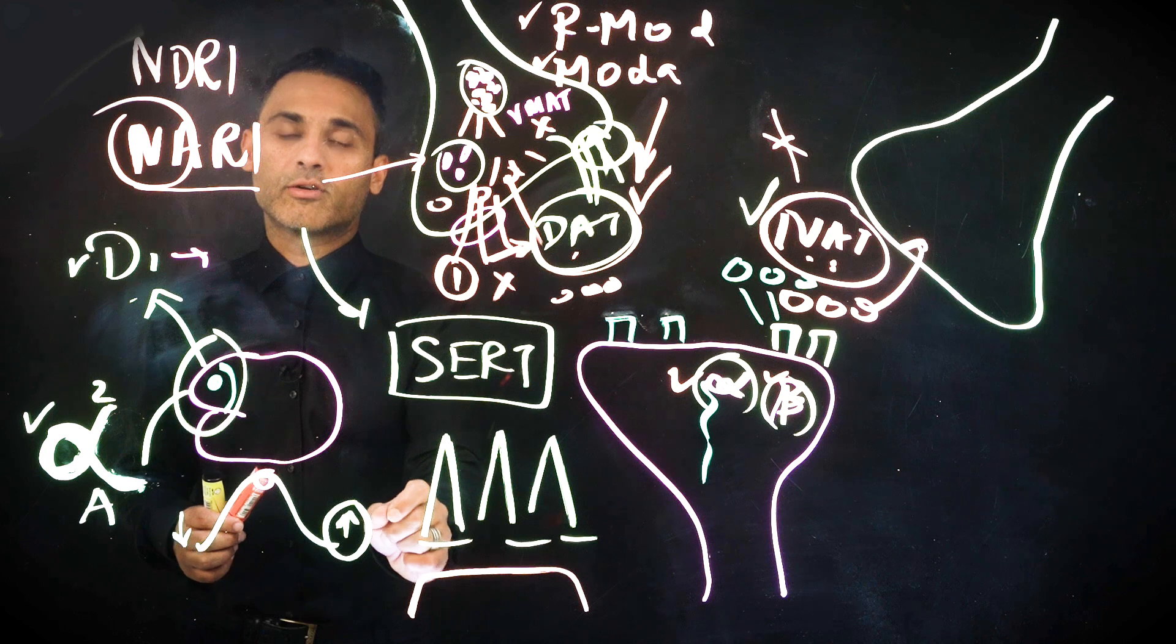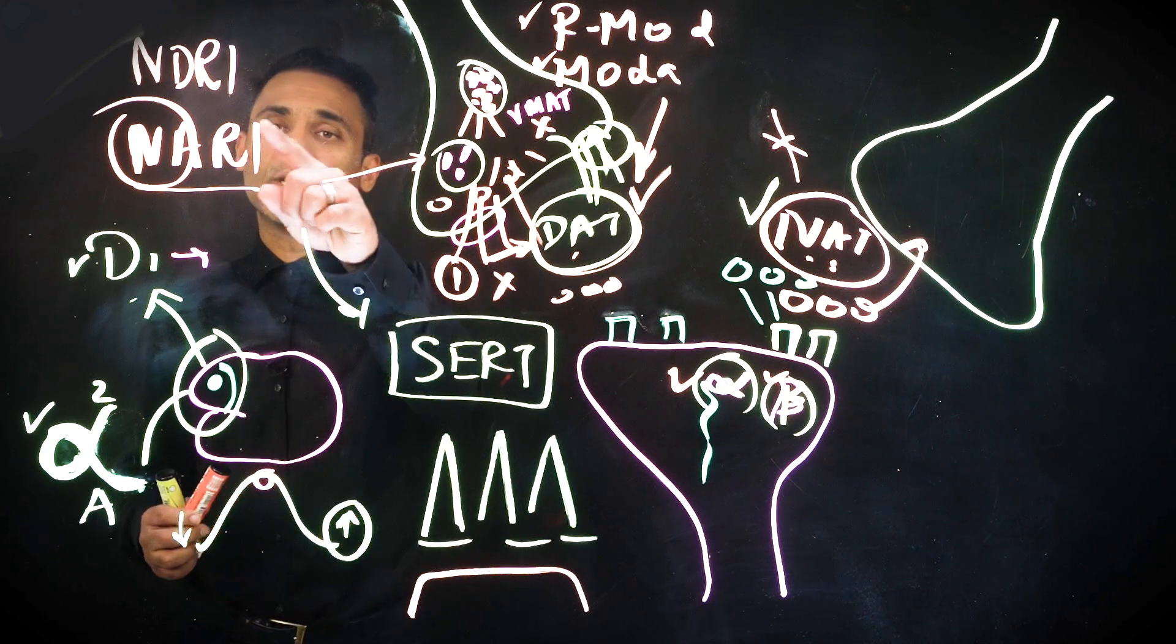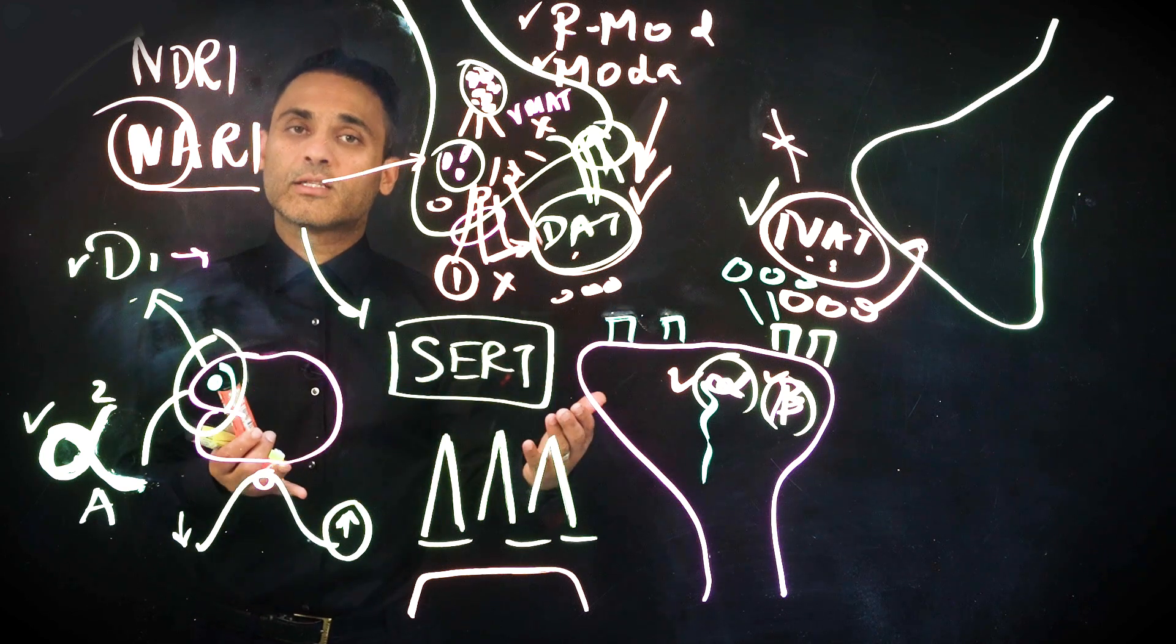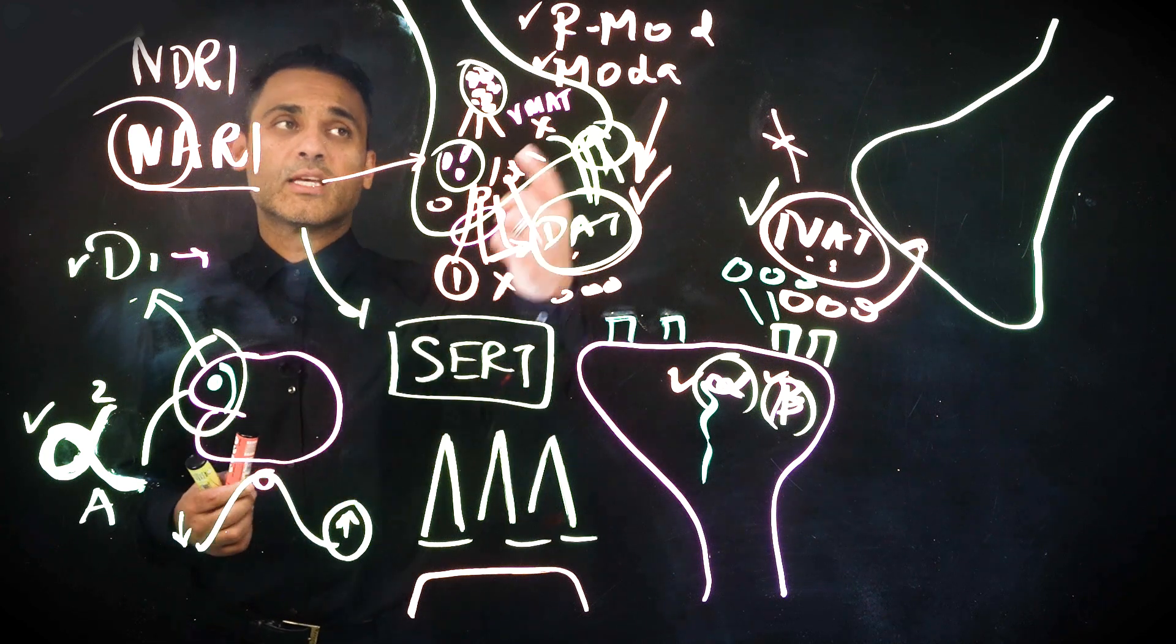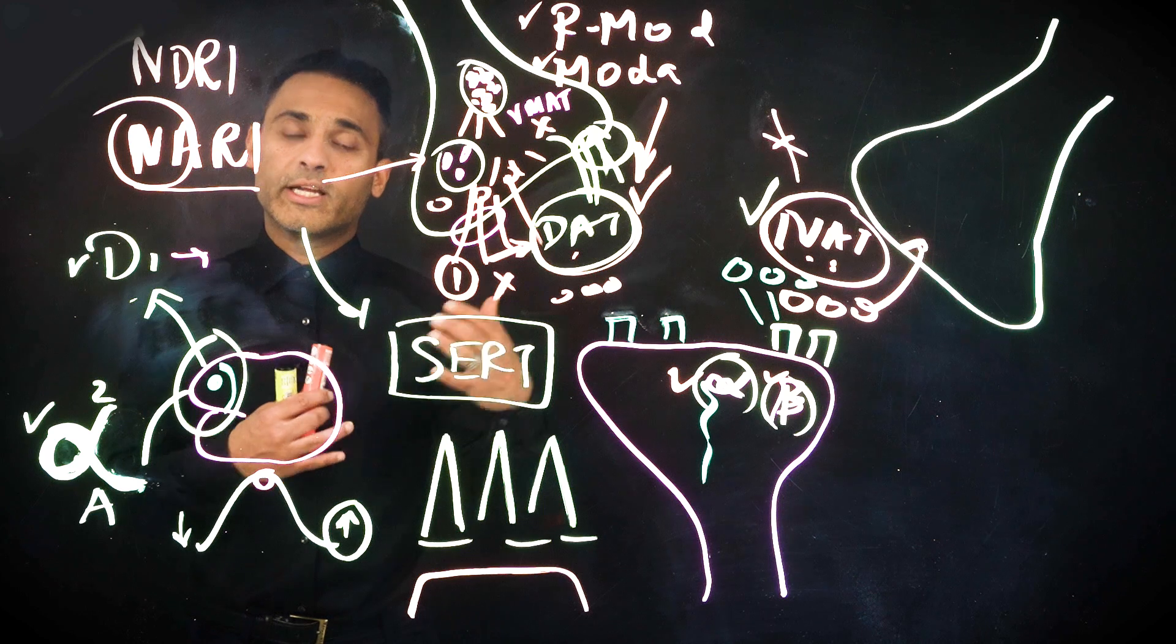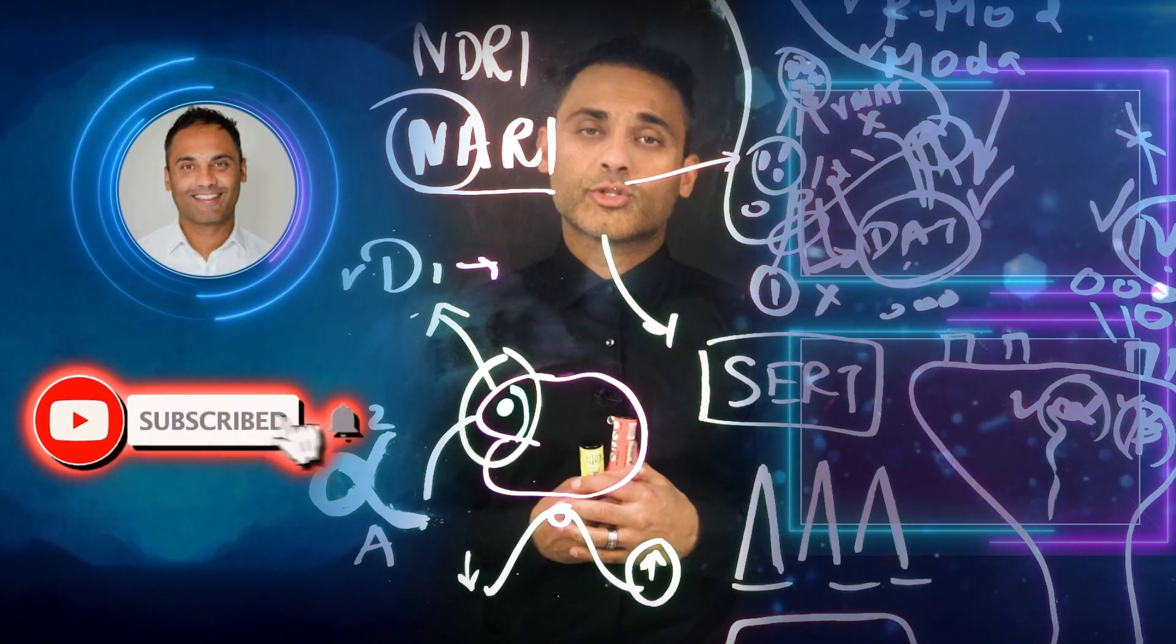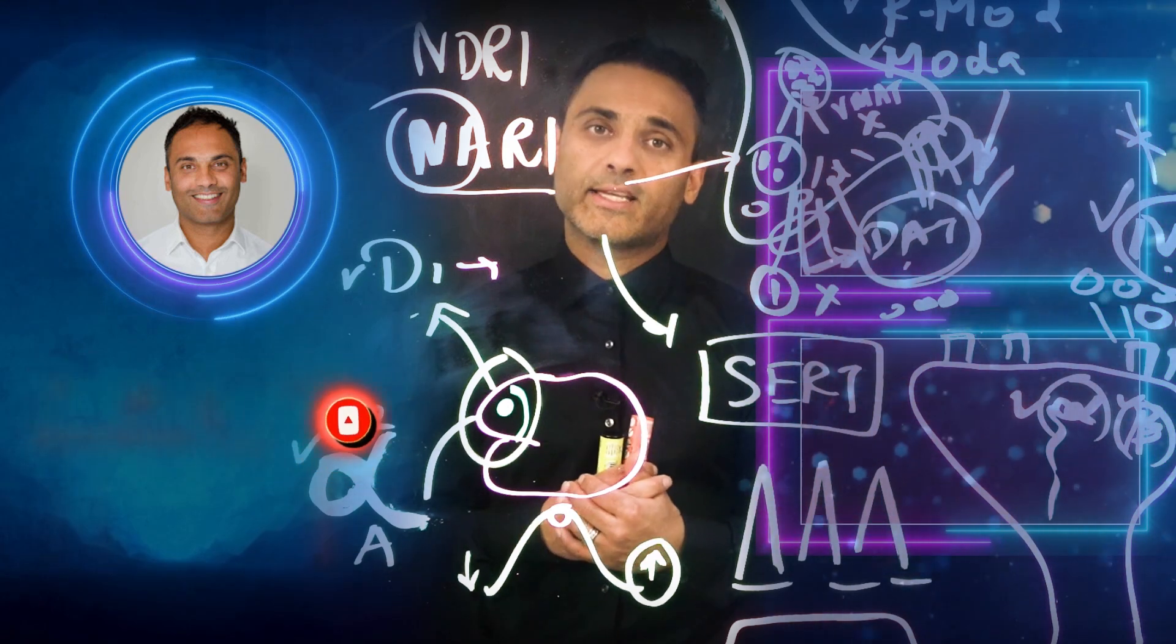And that's why we want to consider longer-acting agents with regards to stimulants. Fortunately, of course, when it comes to atomoxetine, we have them as longer-acting in some ways. Their half-life is longer. With bupropion, we know we have XR versions. And similarly, with R-modafinil, it can be prescribed once a day. Modafinil sometimes has a BD dose. So do keep all of this in mind and the differential properties as well when treating patients with ADHD.